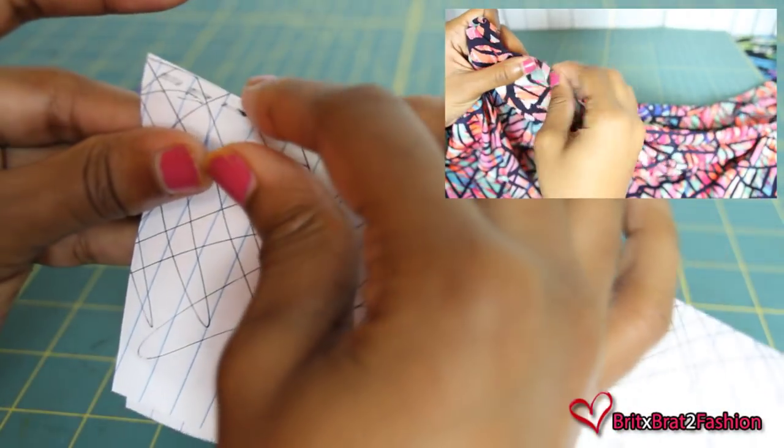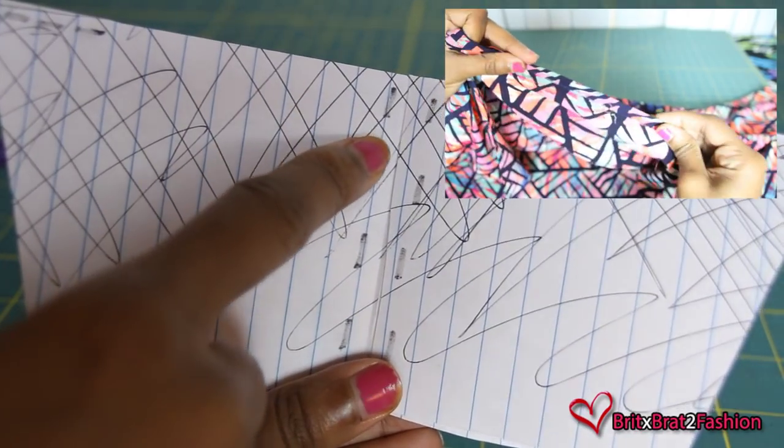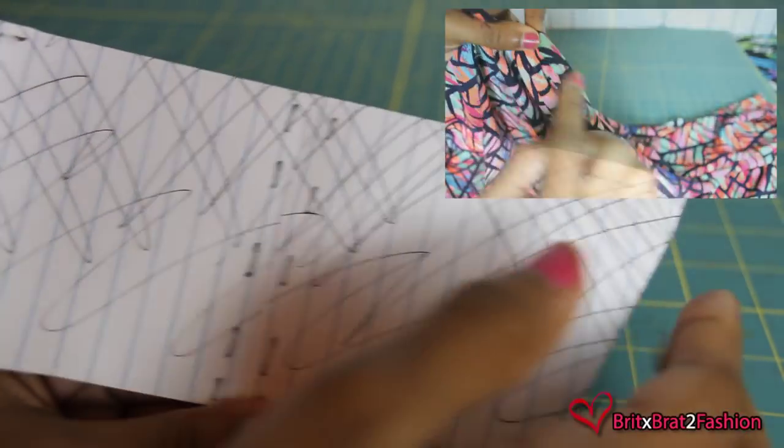You also want to hem the center front of your cardigan using a rolled hem as well. But I just fold in twice and stitched along the edge.